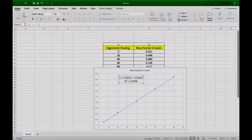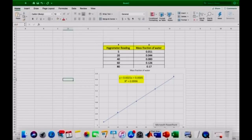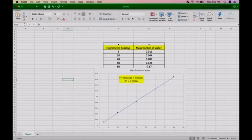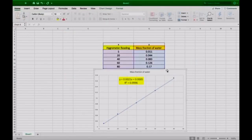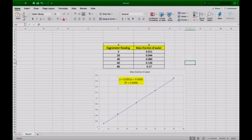What we end up getting is y equals 0.0021 times the hygrometer reading plus 0.0005 equals the mass fraction of water. Now all we have to do is enter the hygrometer reading of 43 to determine the mass fraction of water.